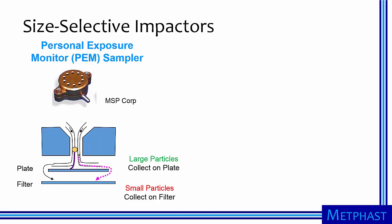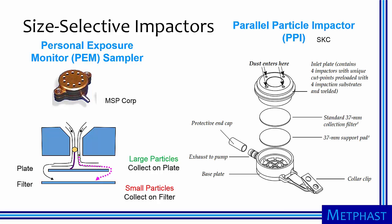There are also size-selective impactors such as the personal exposure monitor or the parallel particle impactor. In these samplers, larger particles collect on an impaction plate and the smaller particles that remain airborne are collected on a filter. The parallel particle impactor is unique in that it has different diameter impactor nozzles to produce a collection efficiency curve that closely matches either a thoracic or respirable criterion at different airflow rates.